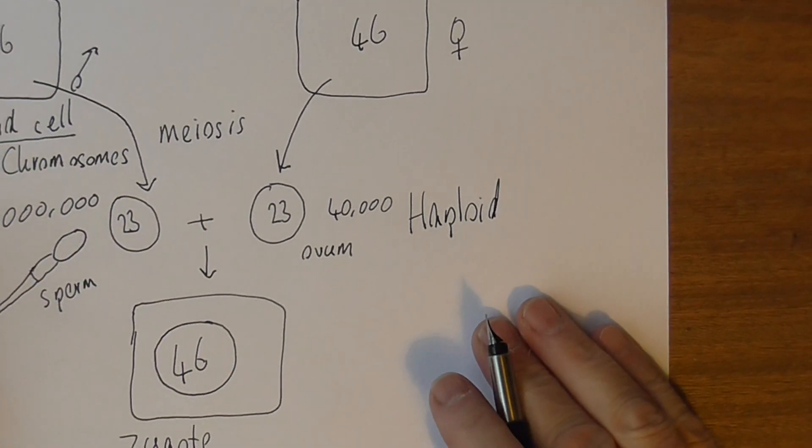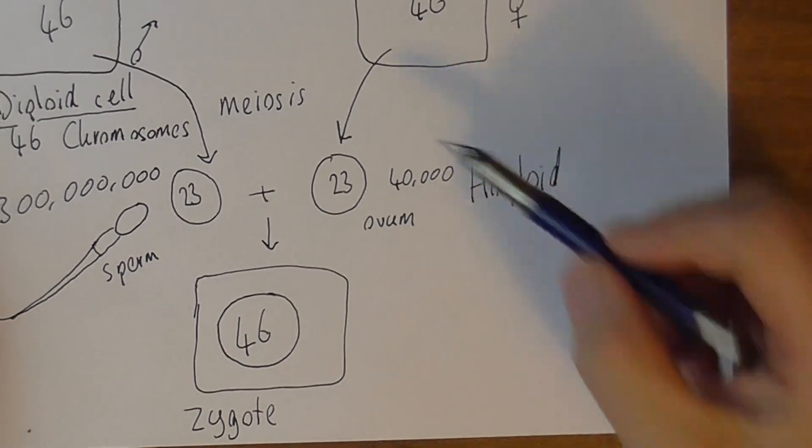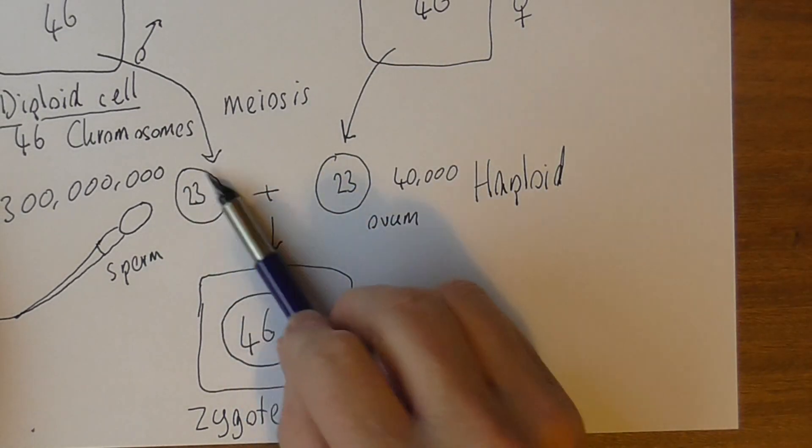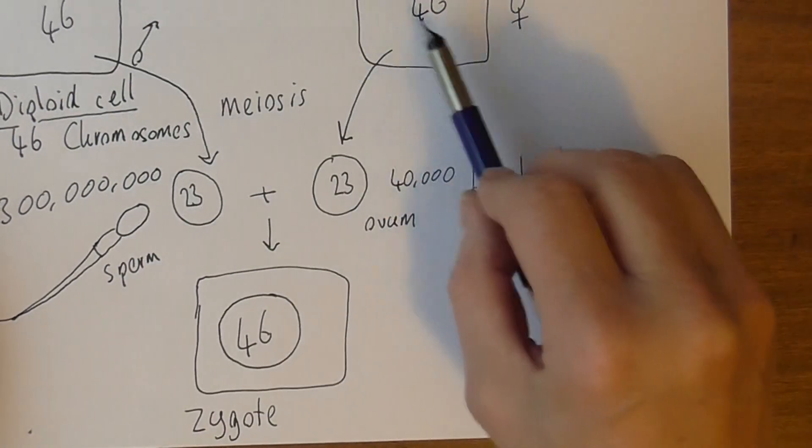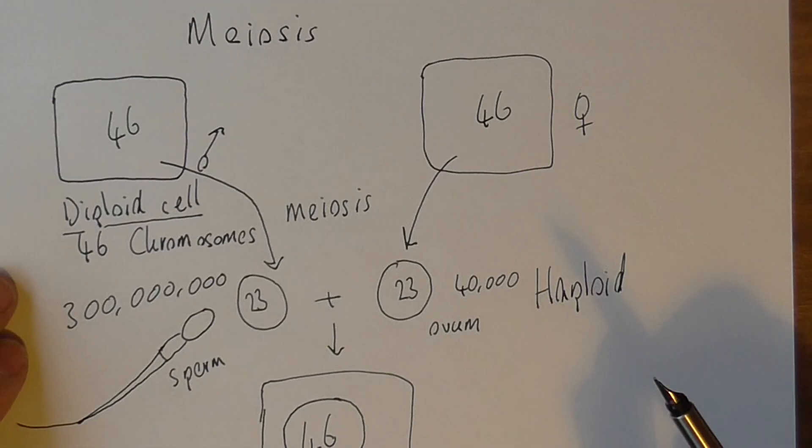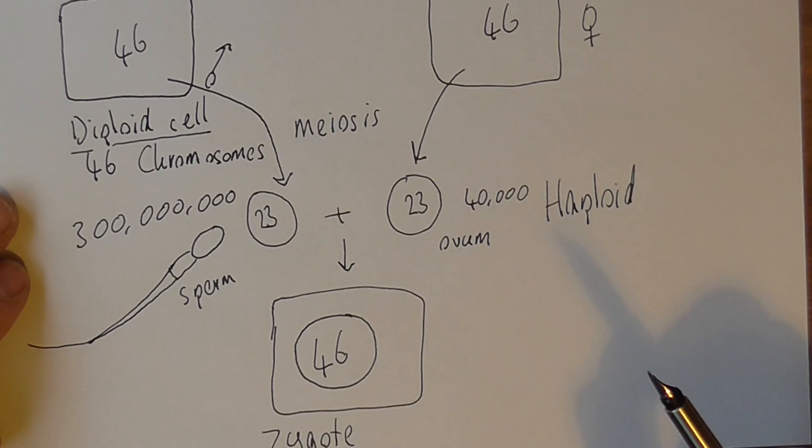It's essential. And in meiosis, the haploid cells produced are not genetically identical to the parent cells because of this process called crossing over that we'll look at in a minute.